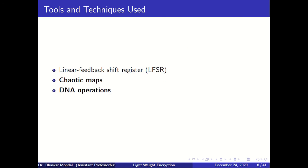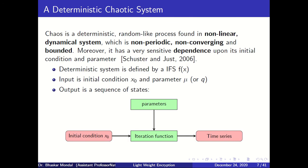The first algorithm I'm going to show is an encryption algorithm based on DNA, DNA operations, and a chaotic map. The next one uses a linear feedback shift register as well. A deterministic chaotic system is a non-linear dynamical system which is non-periodic, non-converging, and bounded. These properties are very important for a good cryptographic algorithm.